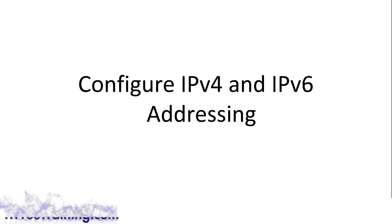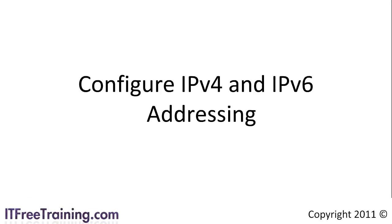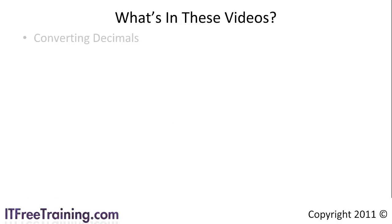In this section of the course I will cover the exam objective to configure IP version 4 and IP version 6 addressing for the 7624 exam. There is quite a bit of information covered in this exam objective, so I have divided it up into multiple videos. In the first video I will look at converting decimals to binary and converting decimals to hexadecimal, followed by working with the AND operator. When you start working with IP addresses, these basic mathematical items become really important to work effectively.